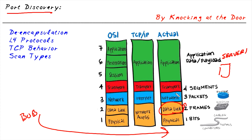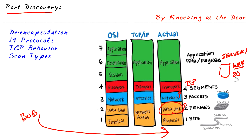It's going to pass it up to the network layer where we have IP running, and the server recognizes its own IP address. The IP header indicates what Layer 4 protocol is being used. If it's an HTTP request, it's going to be using TCP, and if this server is running a web service, it's very likely listening on TCP port 80.